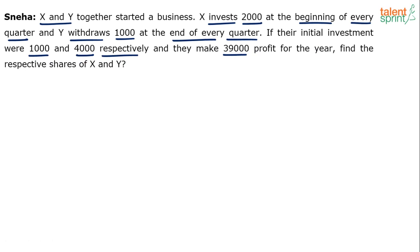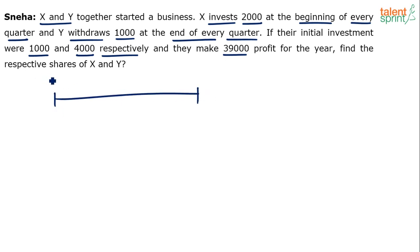How do you do this? Simple. Understand that there is some change happening at every quarter. This is the whole year. So when they start they have invested 1,000 and 4,000 — that is X and Y respectively. Divide the whole year into 4 quarters. This is the beginning of quarter 1.